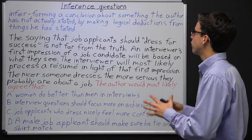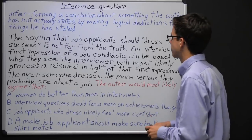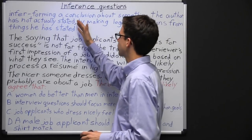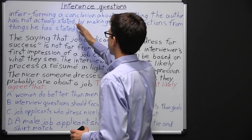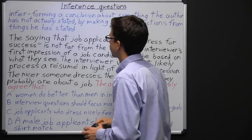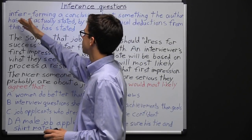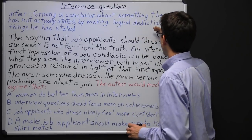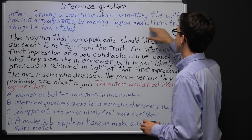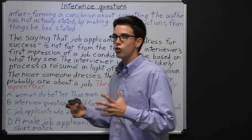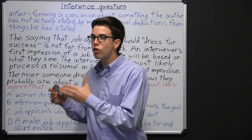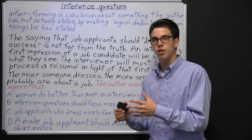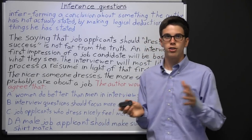When someone infers something, it means they form a conclusion about something the author has not actually stated, by making logical deductions from things the author has stated. If you were to just read the first part of that definition, you might think an inference is a guess — forming a conclusion about something the author has not actually stated. But you also base an inference on things the author has stated, so it's not something you're making up; you're basing it on logical reasoning. Basically, you're reading between the lines. 'Infer' is closely related to the word 'imply' — they are flip sides of the same coin. An author implies something by suggesting it without saying it directly, and then a reader infers what the author is trying to imply.